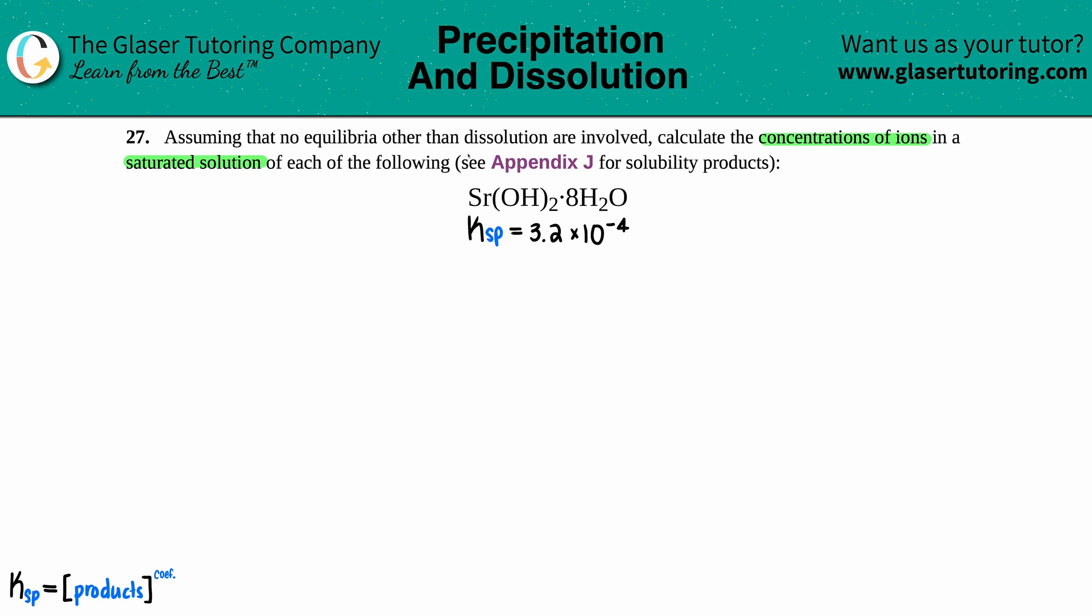In this example, we have to find out the concentration of the ions in this hydrate, strontium hydroxide Sr(OH)₂ octahydrate. I did have to go in the back of the textbook to find out what the solubility product is, the Ksp of this strontium hydroxide octahydrate, which is 3.2 times 10 to the negative fourth.